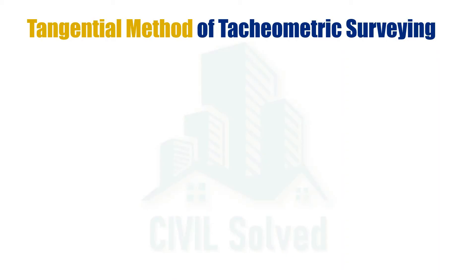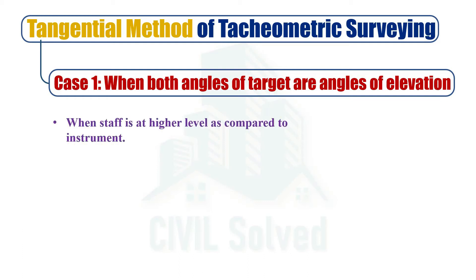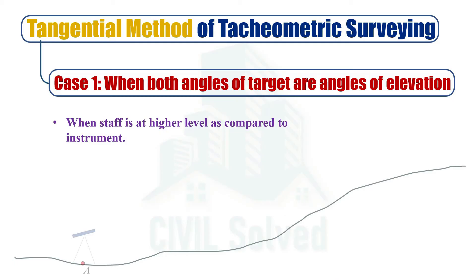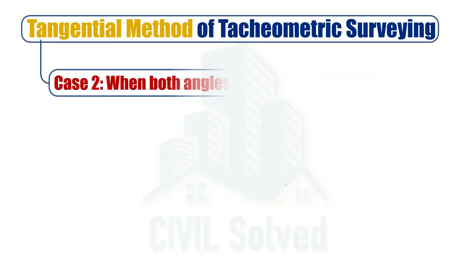The first case is one in which both angles of target are angles of elevation. This case is used when the staff is at a higher level compared to the instrument, or the instrument is at a lower level than the staff. For example, in this type of cross section of land, the instrument is placed at one point and the staff at another. The two stadia readings are taken at angles theta one and theta two, and similarly the calculation is done by finding the stadia intercept and using trigonometry.